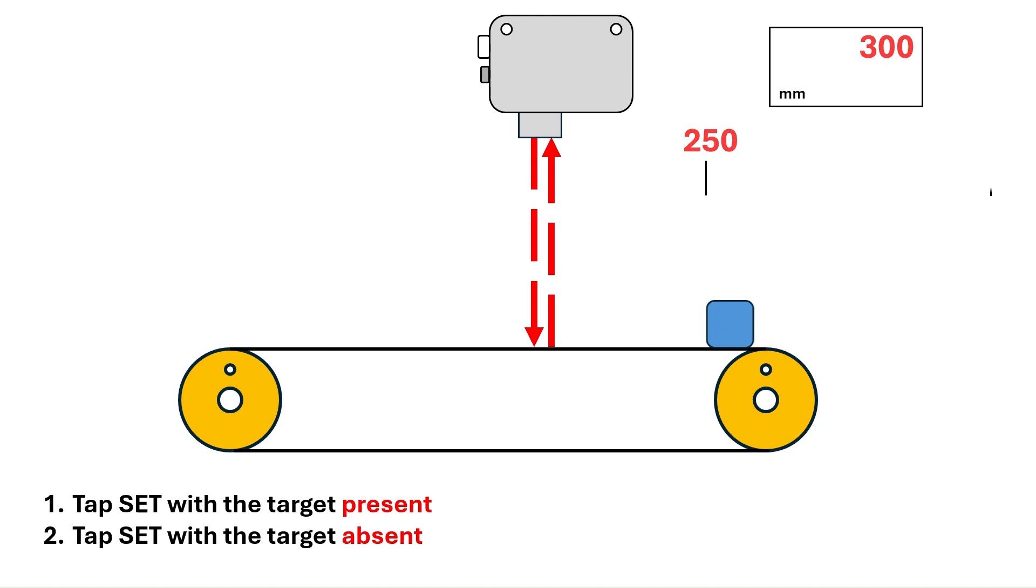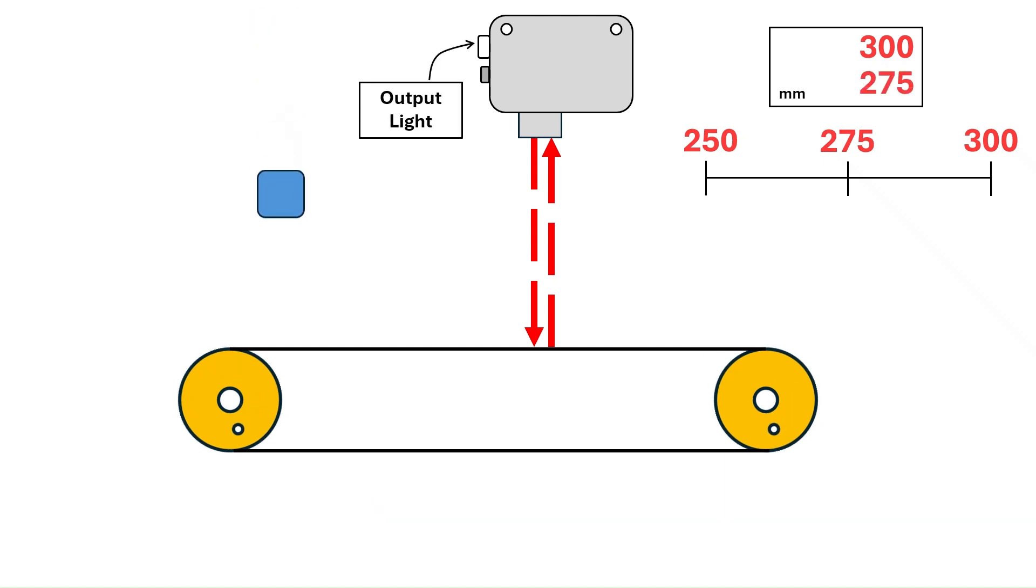The set point will be placed in the middle of these two distance values, making it 275 millimeters. In this application, the sensor will trigger when it detects anything closer than 275 millimeters, and the output will turn off when further than 275 millimeters.